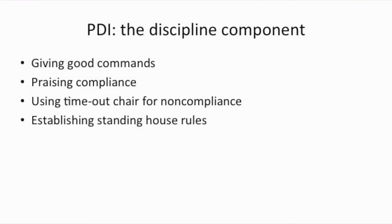After the parent and child meet mastery criteria for CDI — the relationship building aspect of PCIT — we move on to PDI, or the parent-directed interaction portion of PCIT, which is the discipline component. In PDI, we teach parents skills for improving child compliance, decreasing disruptive behaviors, giving good commands, praising effectively when the child complies, using the time-out procedure for noncompliance, and establishing house rules.